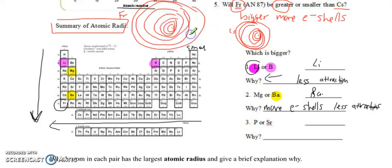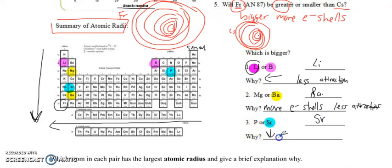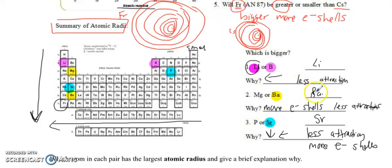Let's try one more example: phosphorus or strontium. Here's phosphorus and here is strontium. This time they're not in the same row or same column. Strontium is further down and it's further to the left, so it has less attraction in two different ways. So which one has to be bigger? Strontium — strontium will be much larger because it's lower and to the left, meaning less attraction and more electron shells.